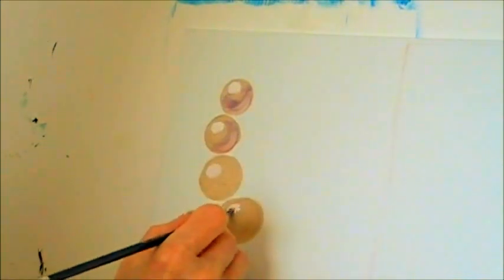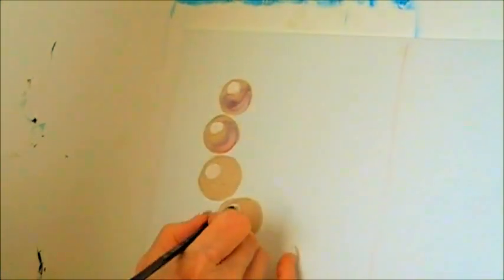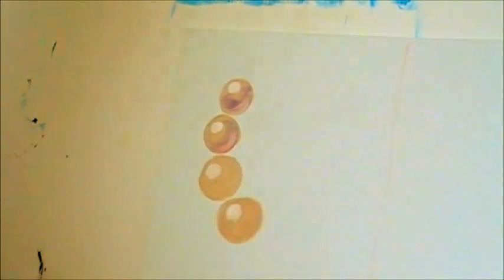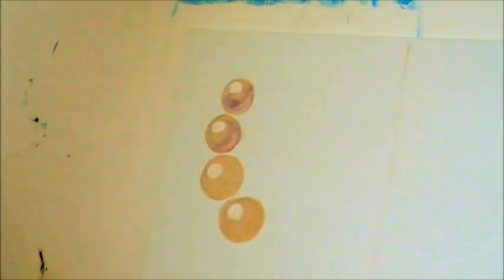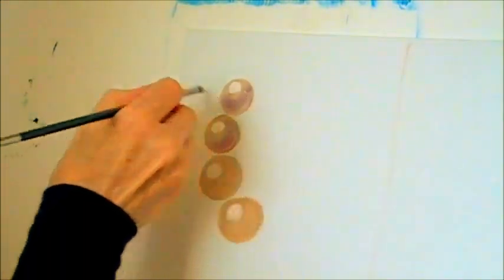And then I am going to put more highlights and darks. You need to put the darks on it, which I am putting right there. Darker here. Make it more rounder.